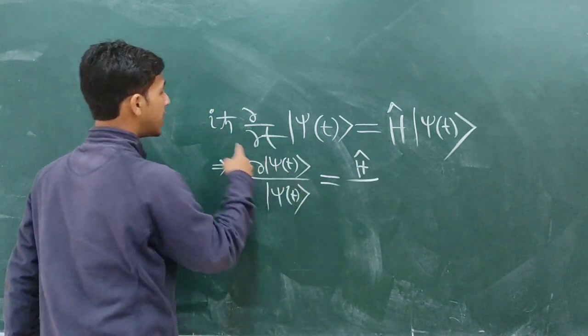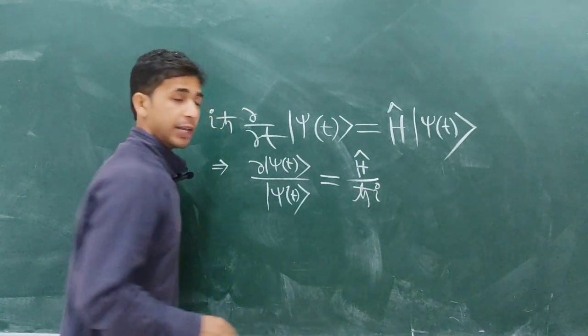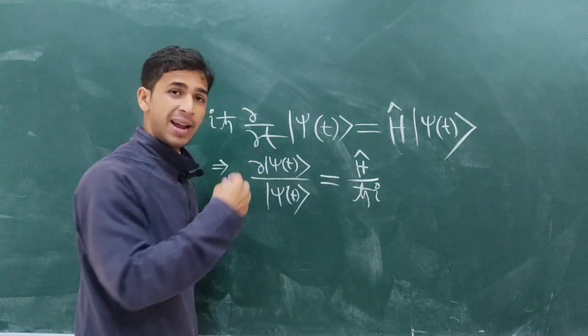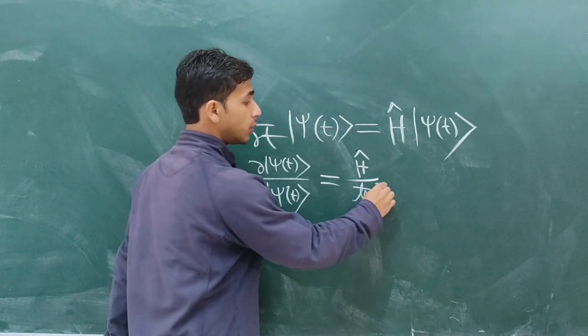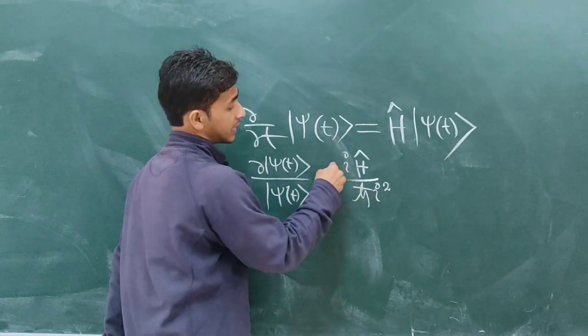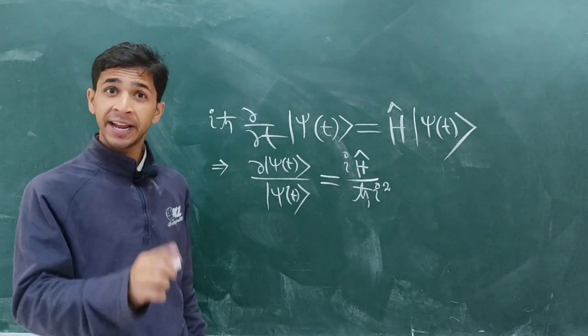And at the numerator we have ℏ/i, and if you multiply upper side and lower side by another i, you will get i² at the bottom and at the top you will get one single i. And we all know i² equals negative one.